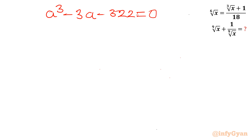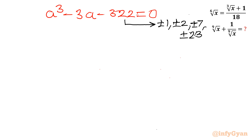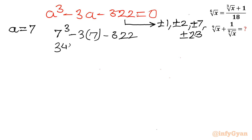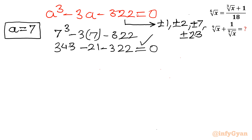Now we solve this cubic equation using the rational root theorem. The eligible factors of the constant term 322 include plus or minus 1, plus or minus 2, plus or minus 7, plus or minus 23, noting 23 is prime. The leading coefficient factors are plus or minus 1 only. Testing small values like 1 and 2 won't work as 322 is large. Let us try a equal to 7: 7 cubed minus 3 times 7 minus 322 equals 343 minus 21 minus 322 equals 0. Yes, so a equal to 7 is a root.